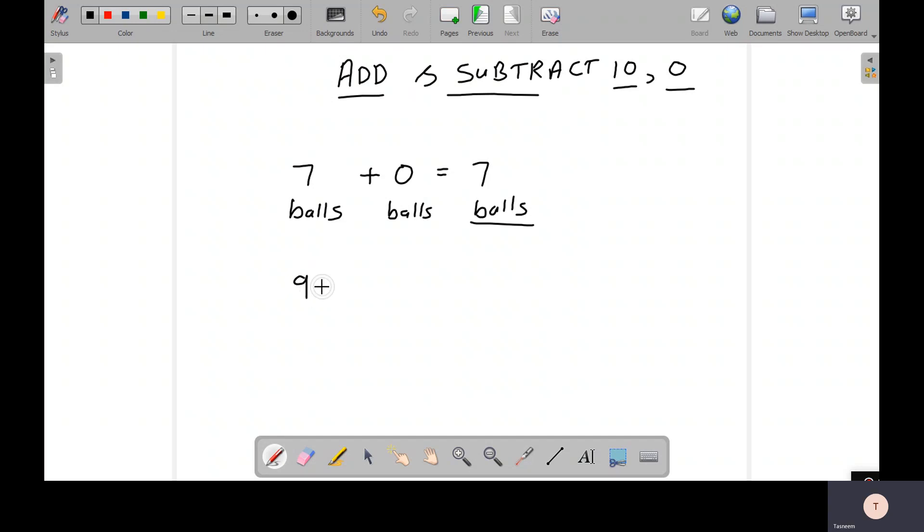Similarly, I can take any number and if I add the number zero to it, I will always get the same number because nothing is getting added to the first number, so the final answer will also be the same. I'll take another example: if I take the number 12 and if I add a zero to it, it will still remain 12. So this is the way I understand the concept of adding a zero to a number—it will always give me the same number.